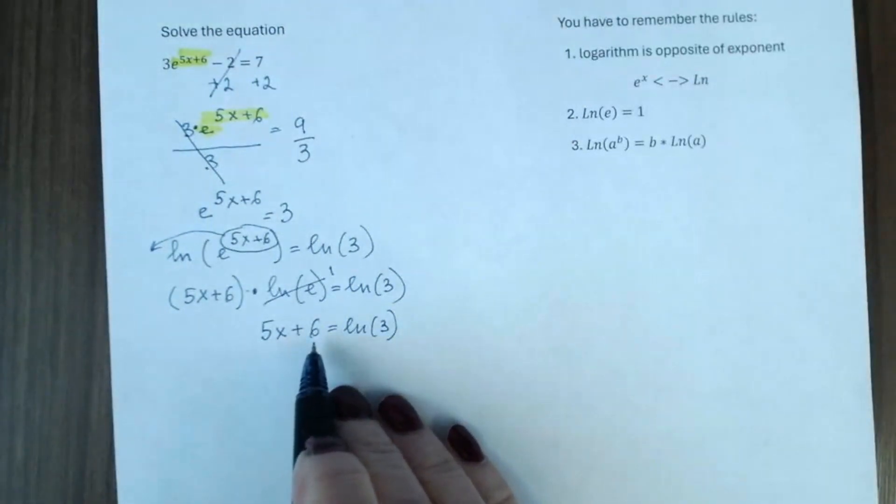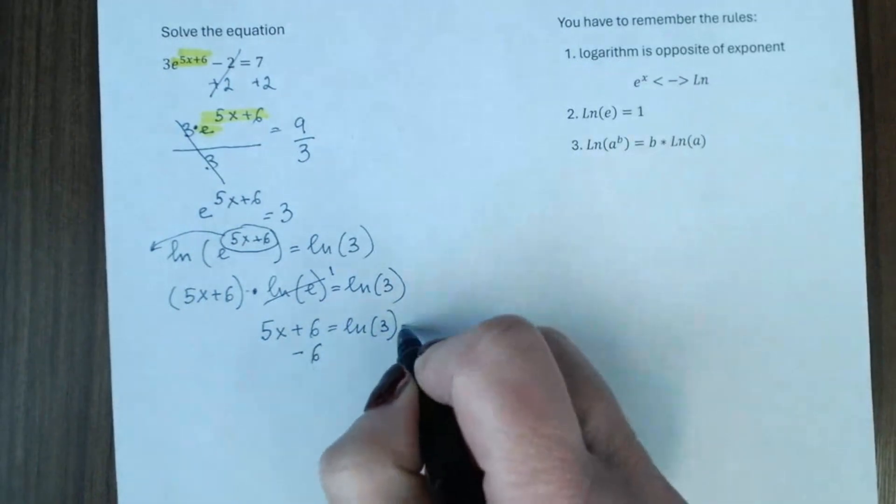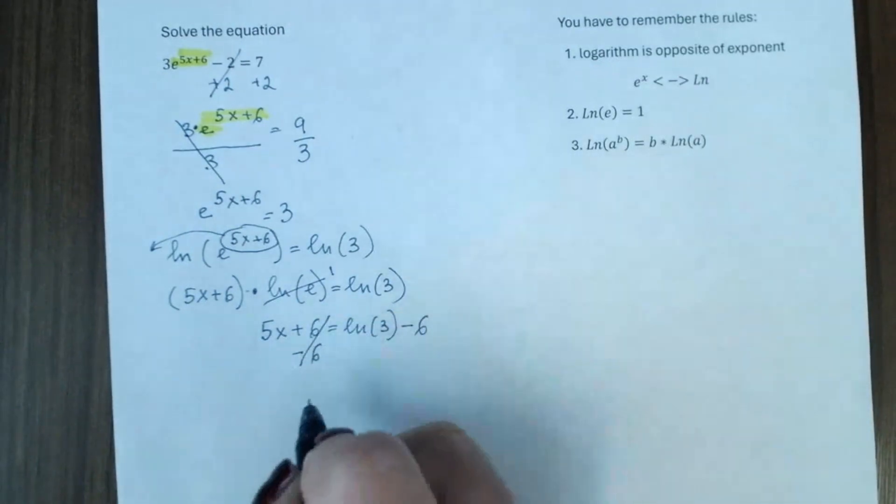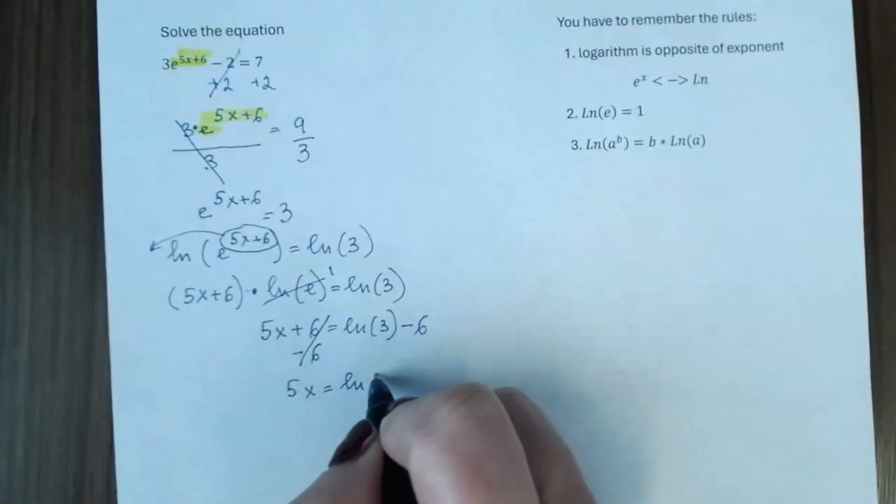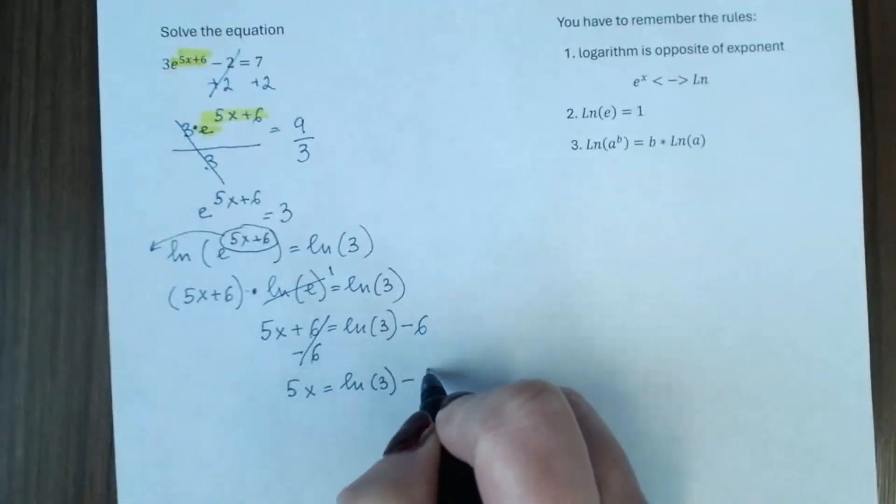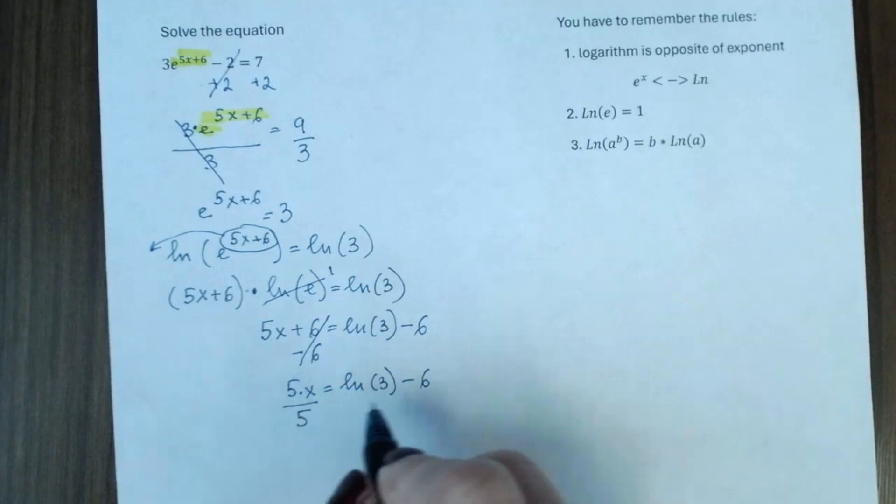This is a linear equation. To find x, we will subtract 6 from both sides. And it will be 5x equal to natural logarithm of 3 minus 6. And again, it's a multiplication between 5 and x. So, we will divide both sides by 5.